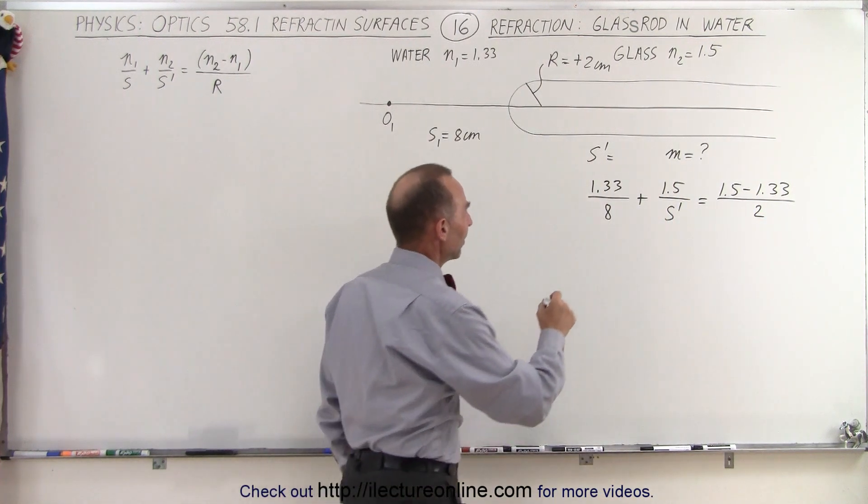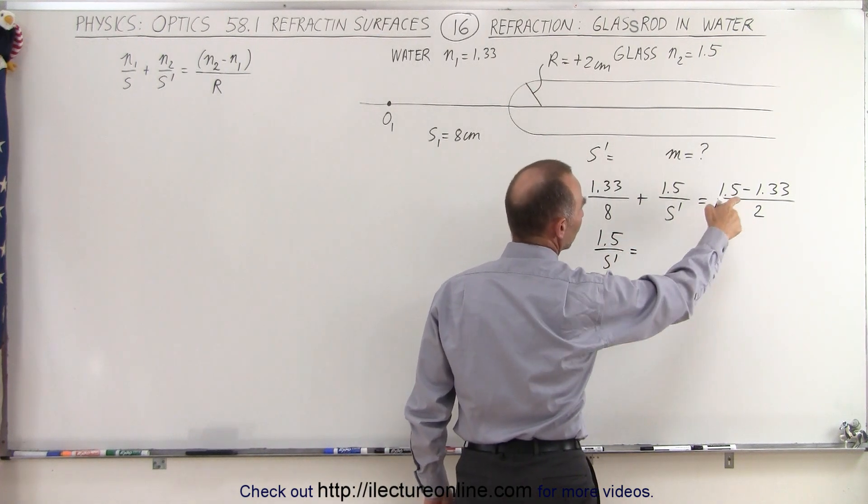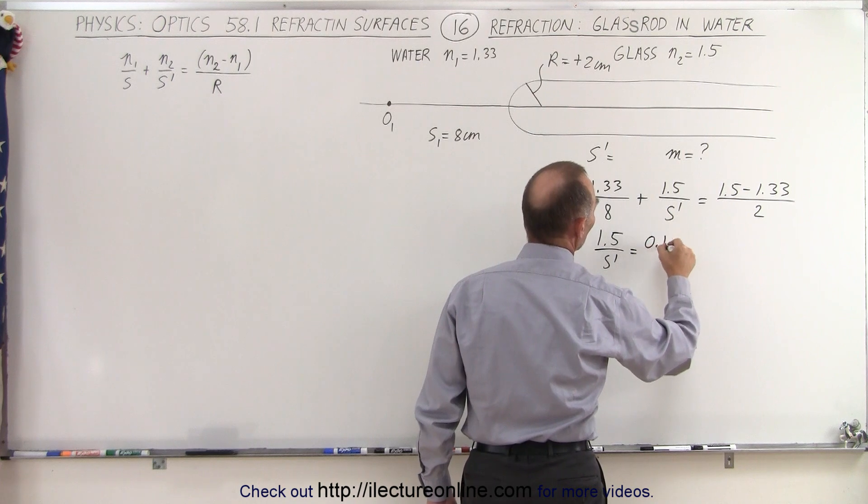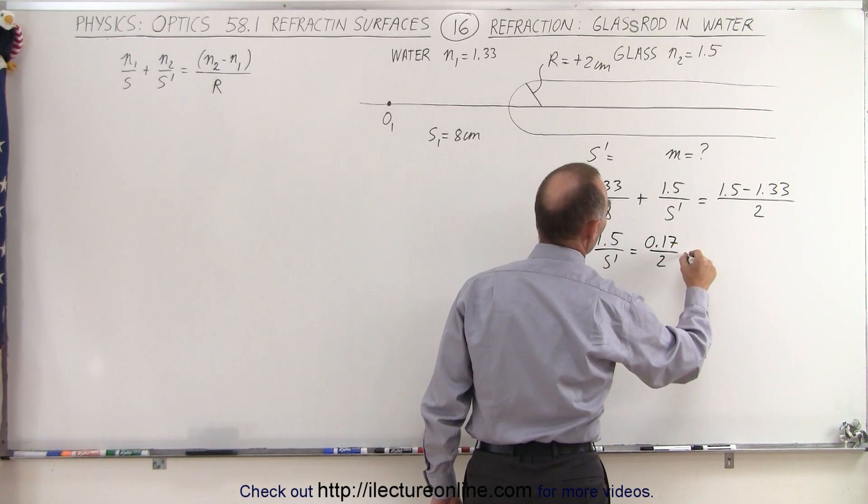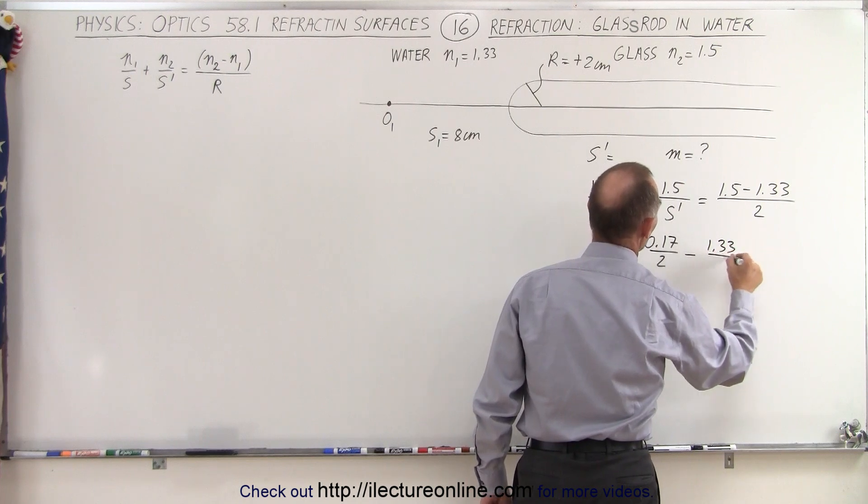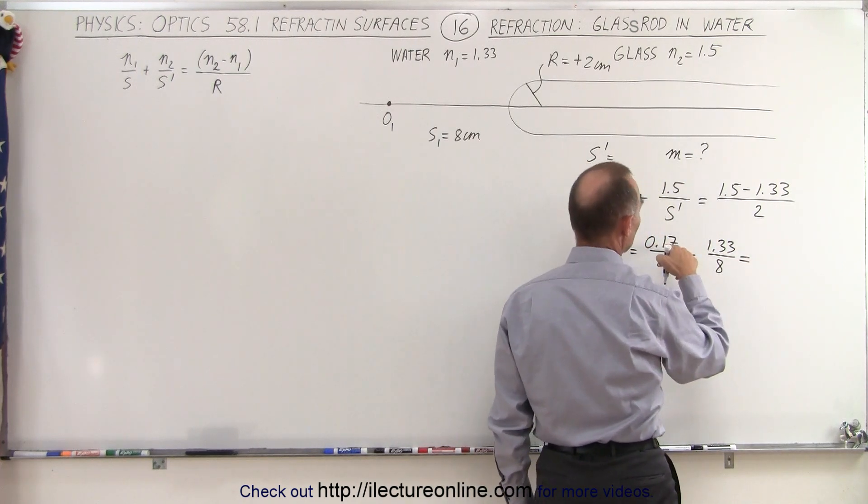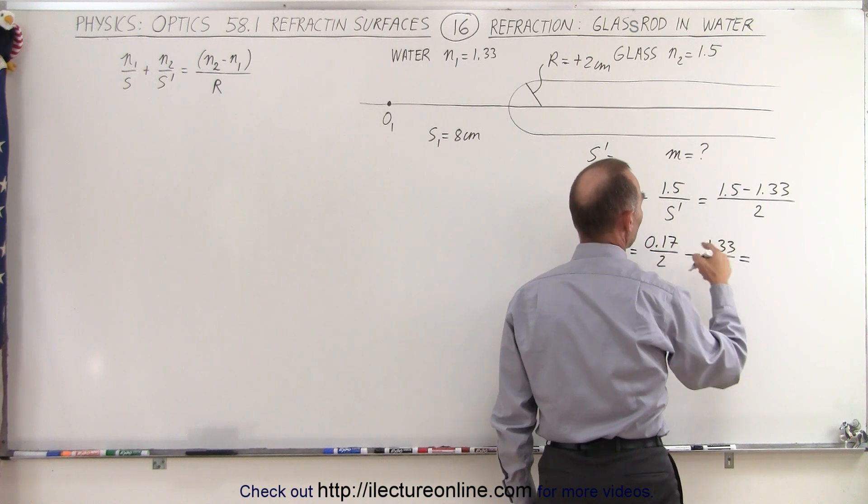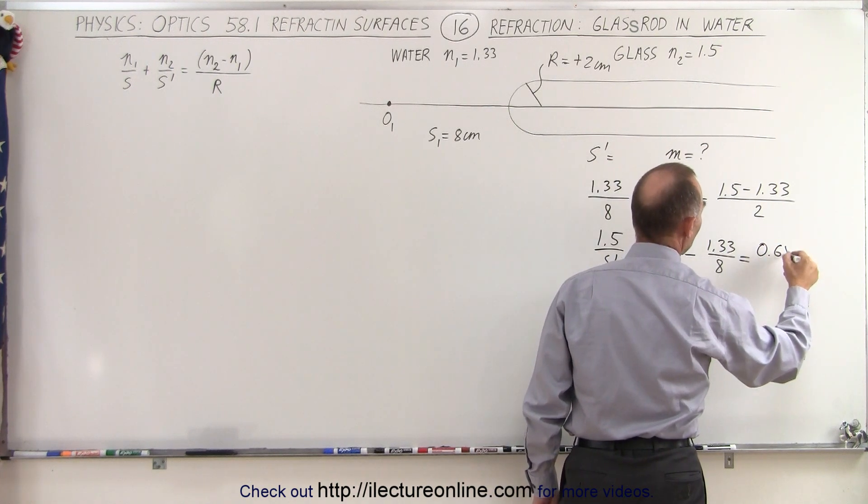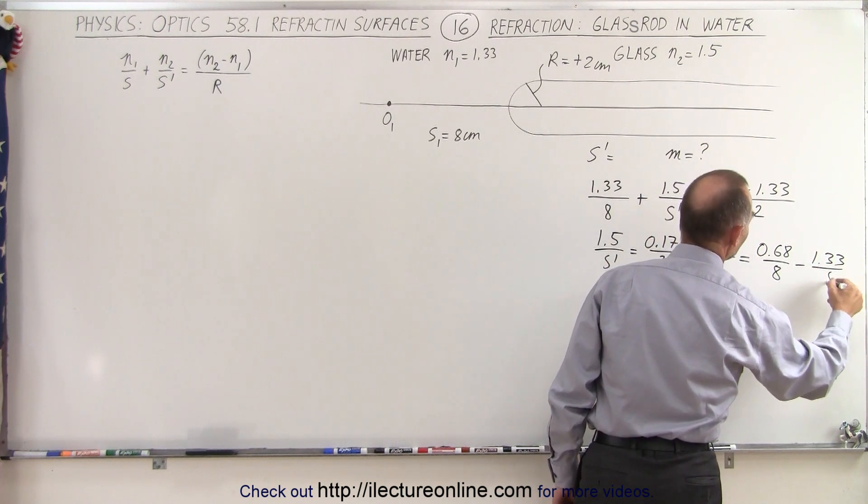All right, simplifying this we get 1.5 over s prime is equal to 0.17 over 2, minus, bringing this across, 1.33 over 8. Common denominator looks like it's 8.